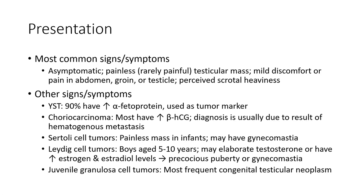The most common signs and symptoms include an asymptomatic testicular mass, mild discomfort or pain in the abdomen, groin, or testicle, a perceived heaviness, and other signs. Around 90% have increased alpha-fetoprotein used as a tumor marker. Choriocarcinoma most often has increased beta-HCG; diagnosis is usually due to hematogenous metastasis.